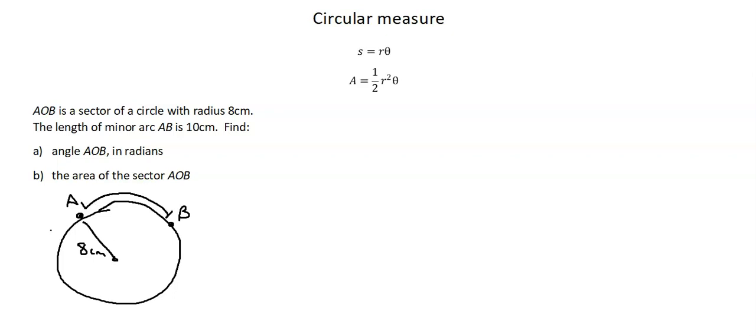If I went the other way around, if I went around the bottom, that would be the major arc. Here, minor arc AB has a length of 10 centimeters, and that's formed from the center. So we'll have another radius here, which is eight centimeters.